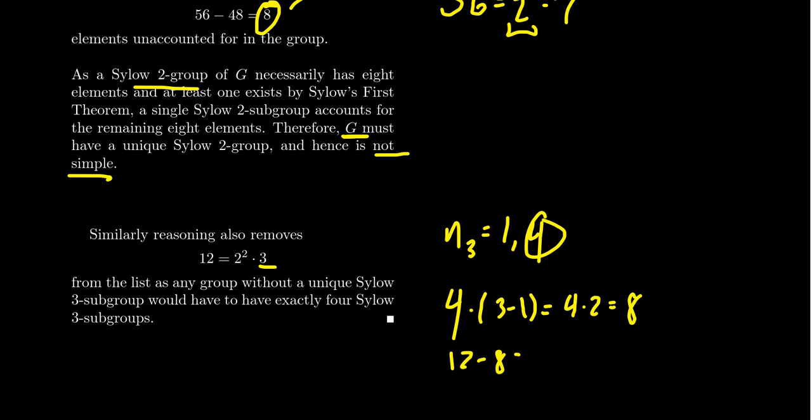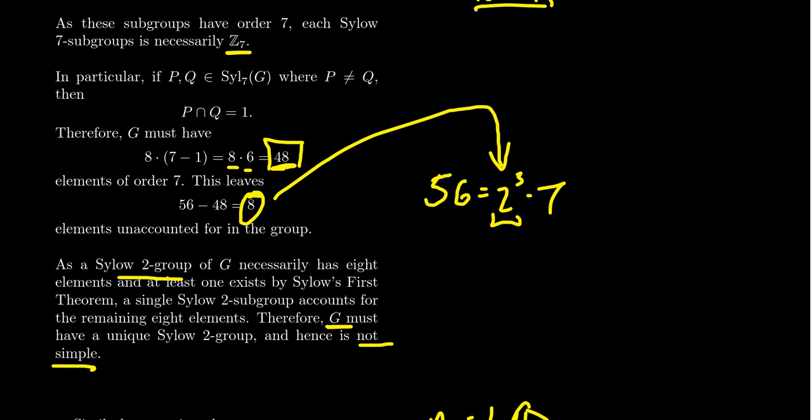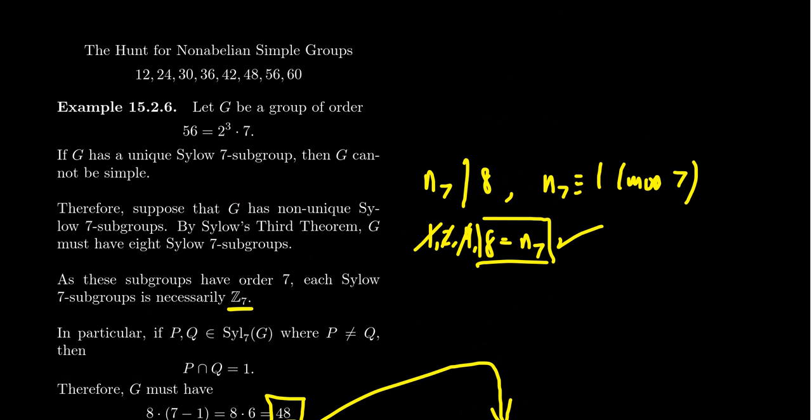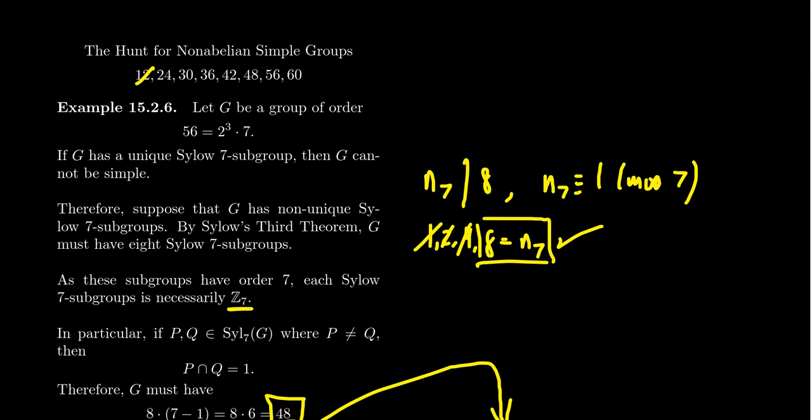12 take away 8 leaves you 4 because there's 8 elements of order 3. So there's 4 elements which are not order 3. But the Sylow 2 subgroup itself is size 4. So the 4 remaining elements have to belong to the Sylow 4 subgroup. So you either have a unique subgroup of order 3 or you have a unique subgroup of order 4. In either case, those Sylow subgroups are normal. So there are no simple groups of order 12. So I want to take those off of our list. We took away 12, we took away 56, and our list just got shorter.